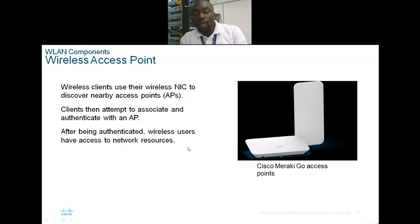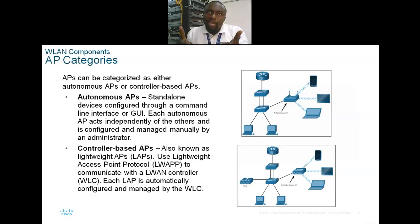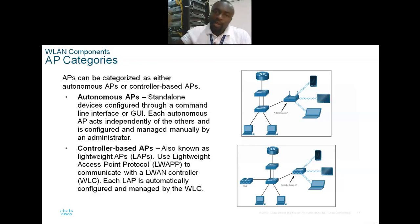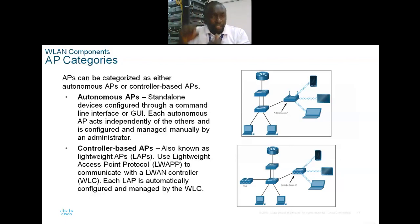Most routers can do DHCP, routing, and connect to your ISP — your ISP gives you a link and you have a connection to your LAN. Some routers have multiple LAN ports. Whereas an access point is just an antenna that helps you connect to the network.